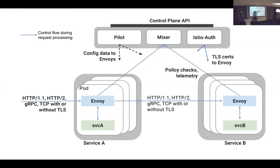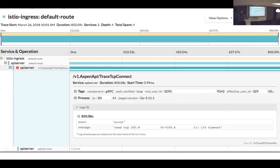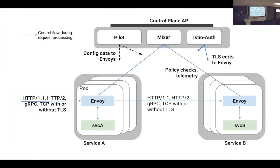Istio Auth is a certificate authority that gives certificates to the Envoy sidecar so that you can do mutual TLS based on the identity of the workloads. What you get out of it is pretty cool.